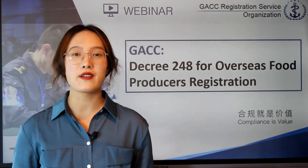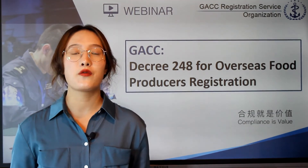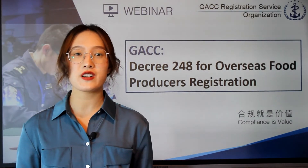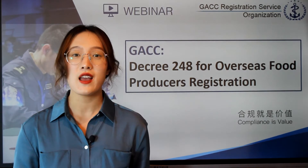For the registration methods, one is recommendation for registration by the CA, and the other is application for registration by the producer. If you are one of the following 18 types — such as stuffed pasta, dried fruits, seeds, nuts, edible oil, health foods, and so on — you shall be recommended for registration to GACC by your CA. For other overseas producers outside those 18 types, you shall apply for registration by yourselves or by agents.